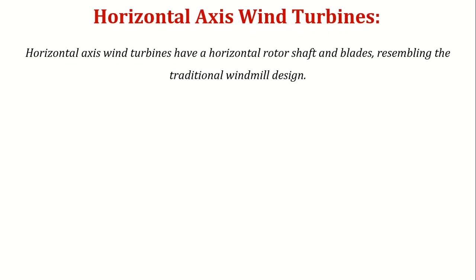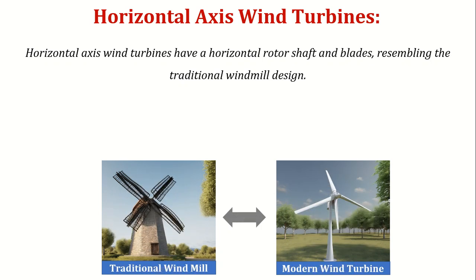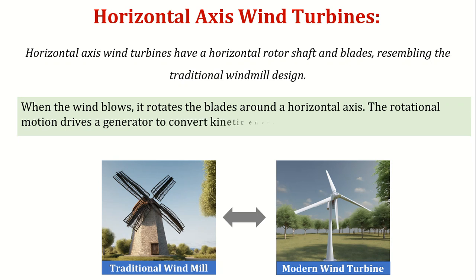Let's discuss the horizontal axis wind turbine first. Horizontal axis wind turbines have a horizontal rotor shaft and blades resembling the traditional windmill design. Please see the image showing how horizontal axis wind turbines have evolved over time. When the wind blows, it rotates the blades around a horizontal axis, and the rotational motion drives a generator to convert kinetic energy into electrical power efficiently.